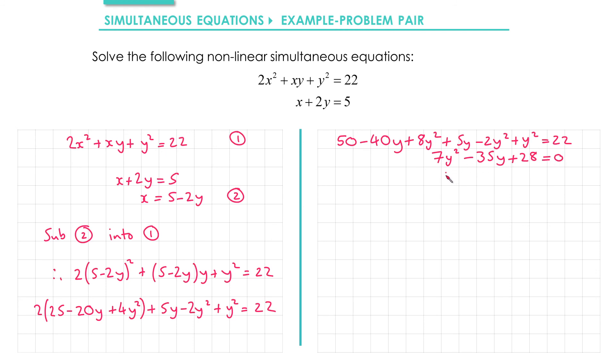Everything divides by 7, so we get y² - 5y + 4 = 0. And then we can factorize to get (y - 1)(y - 4). That gives us solutions of y = 1 or y = 4.